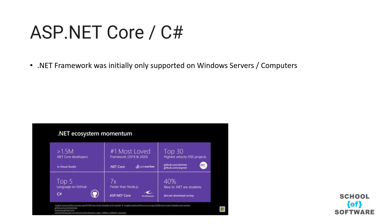.NET Framework initially was only supported on Windows machines — you could only build and deploy your applications to Windows machines or Windows servers. This was the case for many, many years. Microsoft was just focused on Windows and didn't really want to support Linux or other platforms, which prevented a lot of companies from using .NET. But things changed — around 2016, they came up with ASP.NET Core or .NET Core, which was a complete rebuild of .NET Framework in a cross-platform manner.